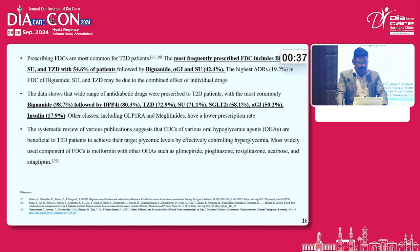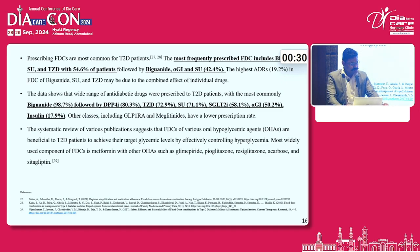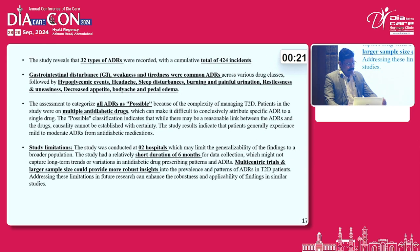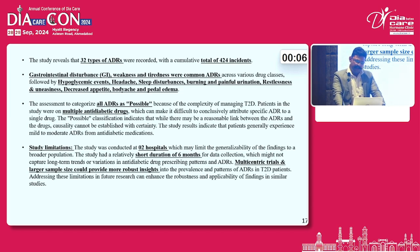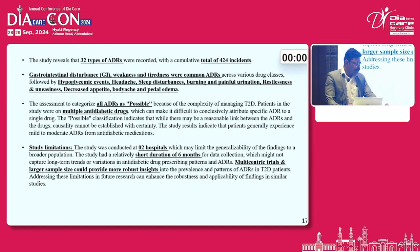A wide range of anti-diabetic drugs were prescribed to T2D patients, most commonly pioglitazone, followed by DPP4 inhibitors, then TGD and sulfonylurea. The most frequently observed ADR was gastrointestinal, followed by weakness and tiredness. There were also incidences of hypoglycemic events, headache, sleep disturbance, burning and painful urination, restlessness, uneasiness, decreased appetite, body ache, and pedal edema. All ADRs were categorized as possible because all patients were prescribed one or more medications.